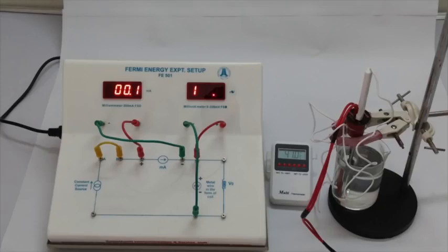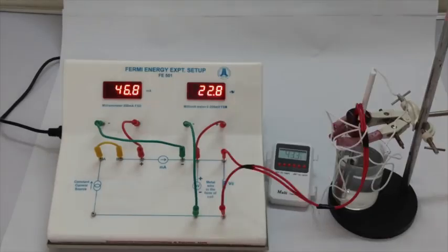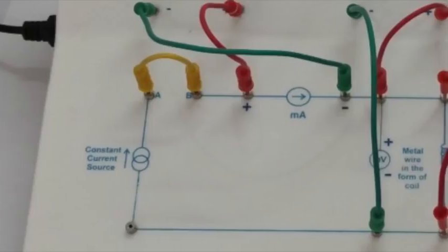Now the fourth connection: one of the banana pins from the coil is connected to one of these two points in the circuit and the other one to the other point. That's all the connections. After the connections, the setup looks like this.